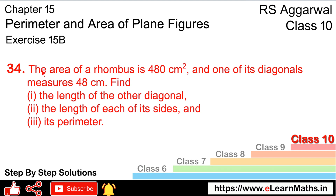Let's do question number 34 of exercise 15B on perimeter and area of plane figures. The area of a rhombus is 480 cm² and one of its diagonals measures 48 cm. We want to find the other diagonal, the length of each side, and the perimeter.